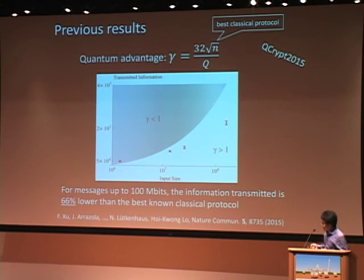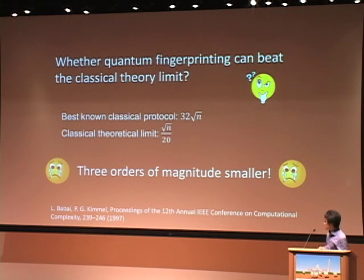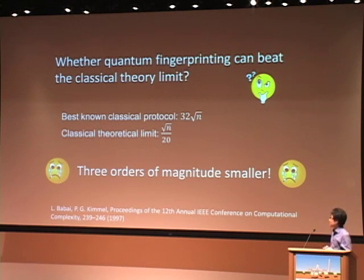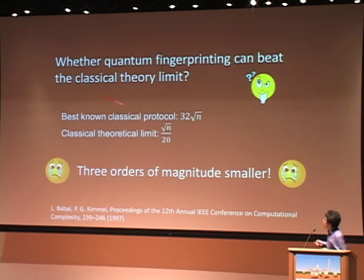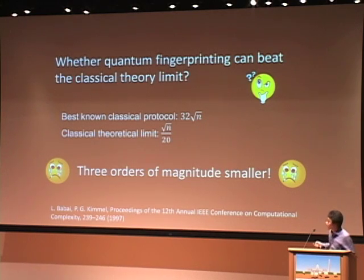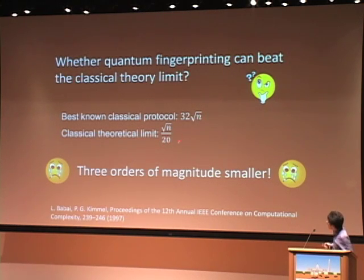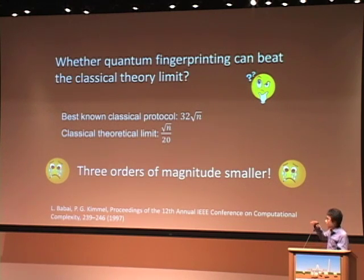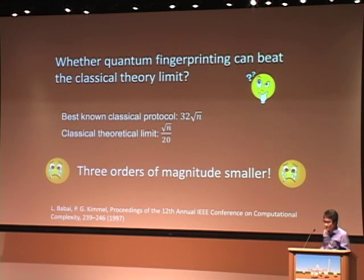After last year's work, we wanted to go further. Our question: can we beat the classical theory limit? As proven in theory, the best classical protocol is about 32 times square root of n, but the classical theory limit is square root of n over 20. Comparing these two numbers, we found there is a three-order-of-magnitude gap. This became the challenging part for our experiment.